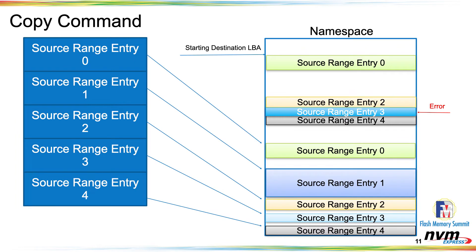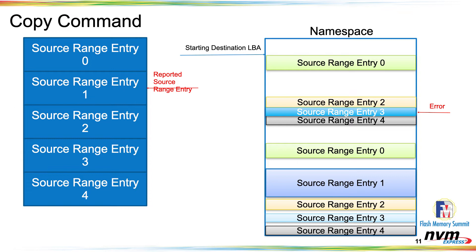Another important thing to understand is what happens when there's an error during a copy. In this case, as the copies were being done, an error came in on source range 3, and the controller needs to abort the command. Not everything was copied — some was, some wasn't. What we've defined is that the controller can report the first source range entity that didn't get transferred correctly. So if source range 0 was successfully transferred, the controller would report that source range entry 1 did not get there, meaning the host must assume entries 1 through 4 may or may not have been copied, and can go correct any issues from that point forward.